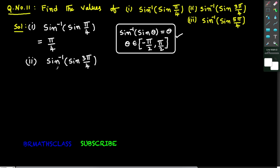Now let's see the second bit. We need to find the value of sin inverse of sin 3π/4. This also looks like sin inverse of sin θ. Can we write sin inverse of sin 3π/4 equals 3π/4? 3π/4 is 135 degrees. Is 135 degrees in between −90 and +90? No. So you cannot apply this formula. Sin inverse of sin 3π/4 is not 3π/4, because 3π/4 does not belong to the closed interval [−π/2, π/2].